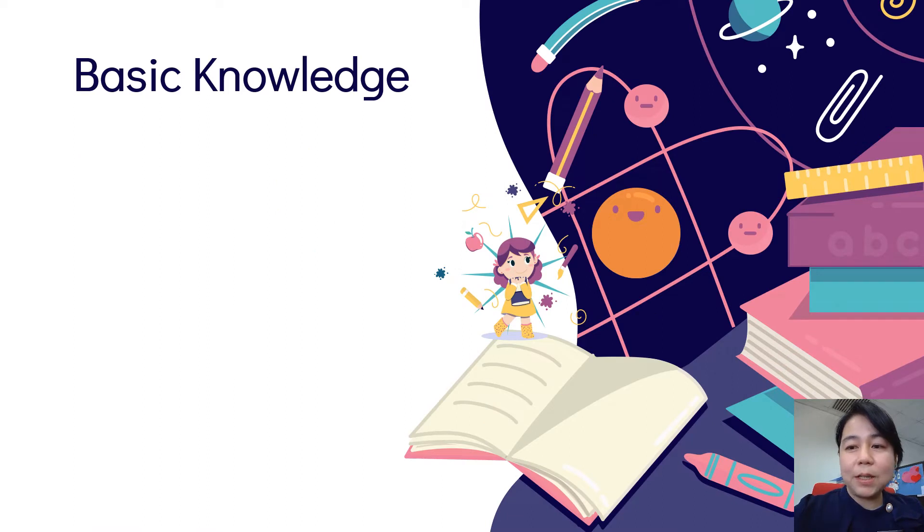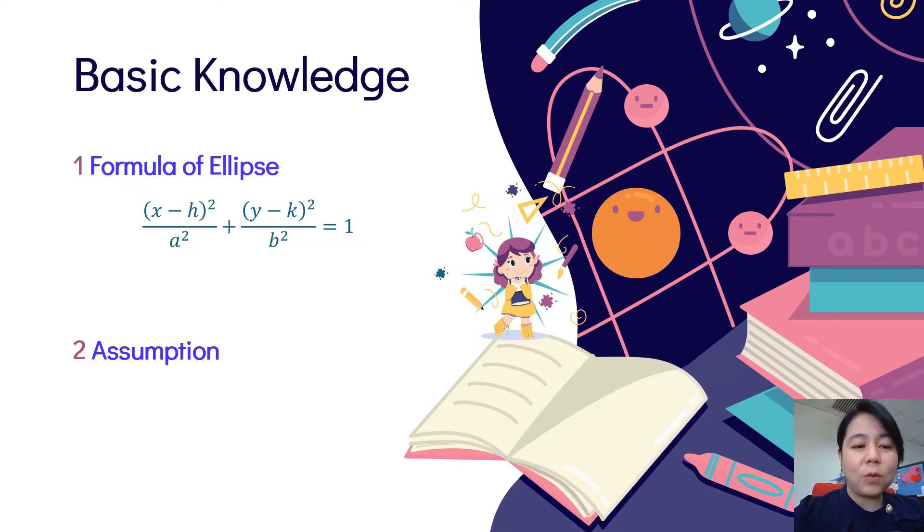The basic knowledge that we need to have before mastering AXBY technique are the formula of ellipse, that is (x-h)²/a² + (y-k)²/b² = 1. And we need to have the assumption that A always with X and B always with Y.